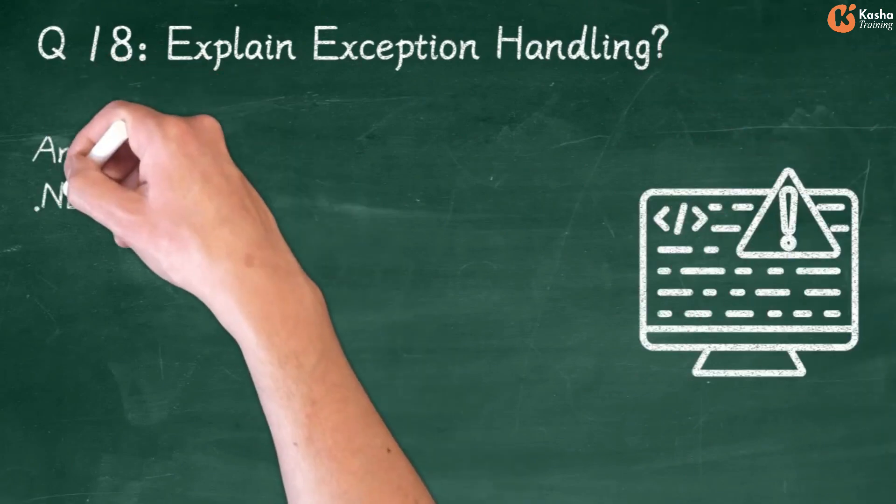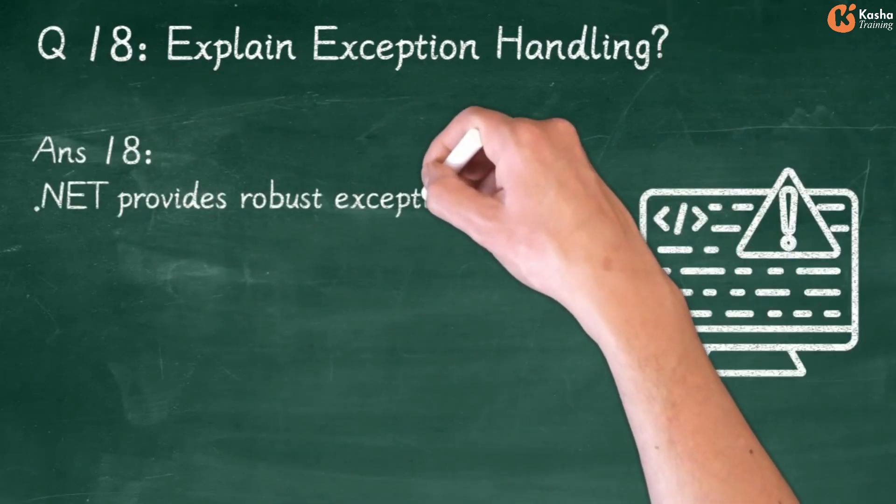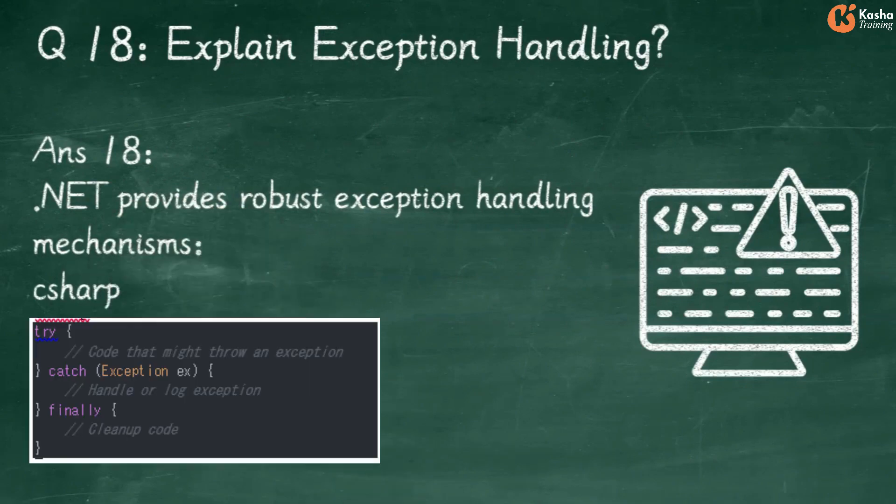Answer 18: .NET provides robust exception handling mechanisms. In C#: Try block contains Code that might throw an exception. Catch(Exception x) handles or logs exceptions. Finally block contains Cleanup Code.